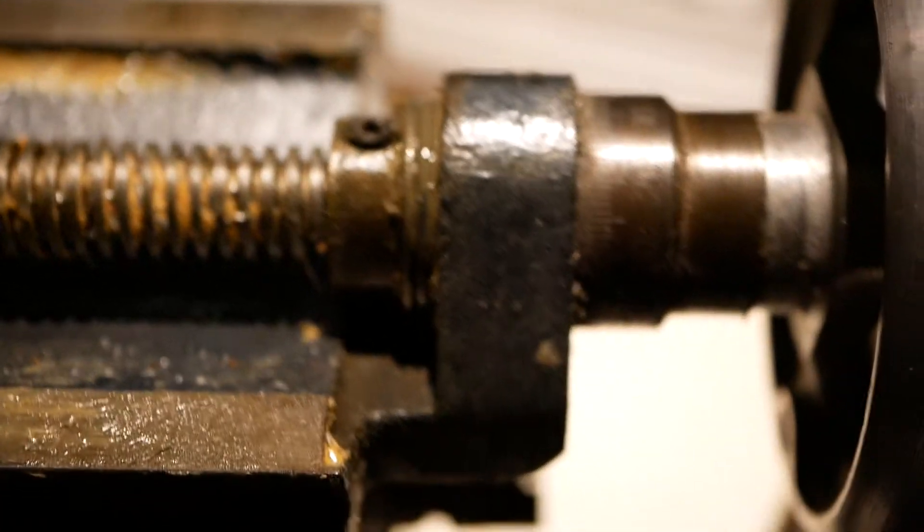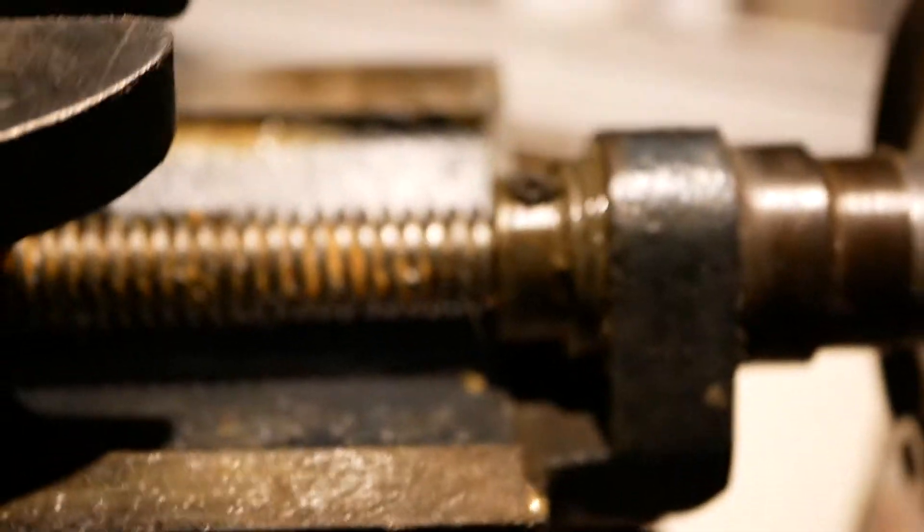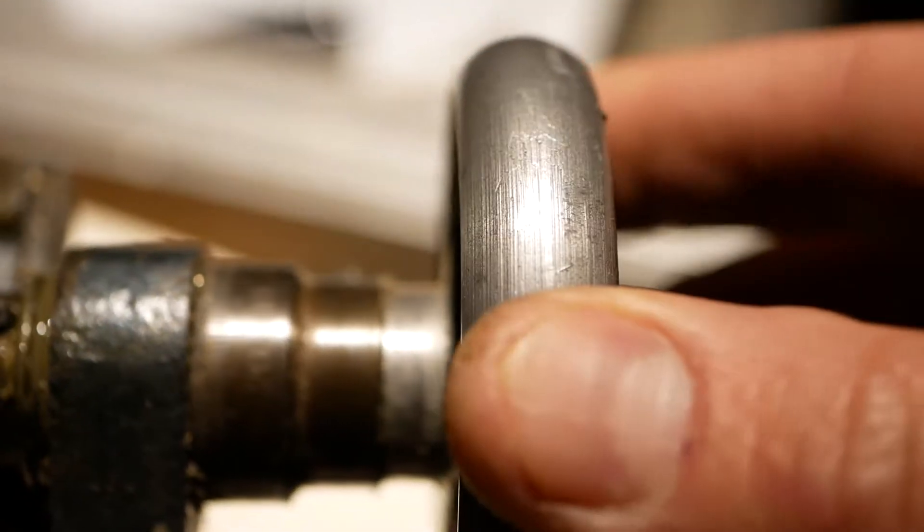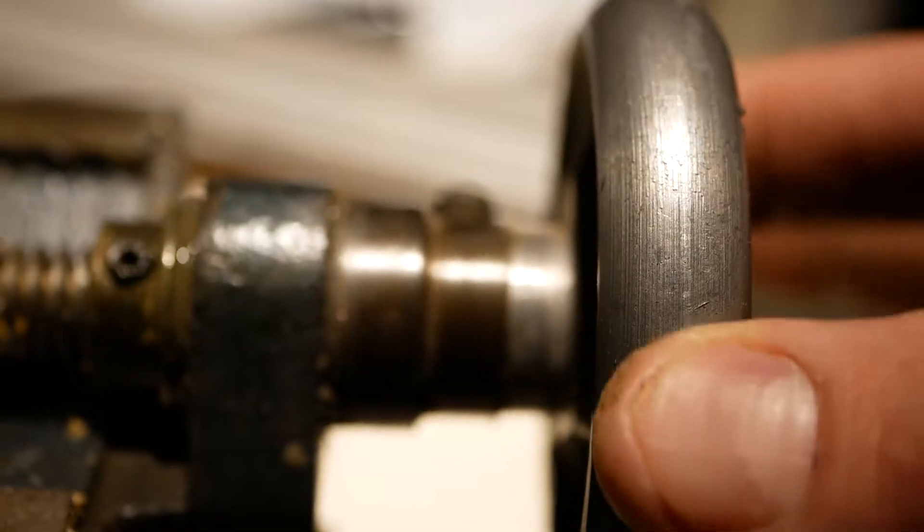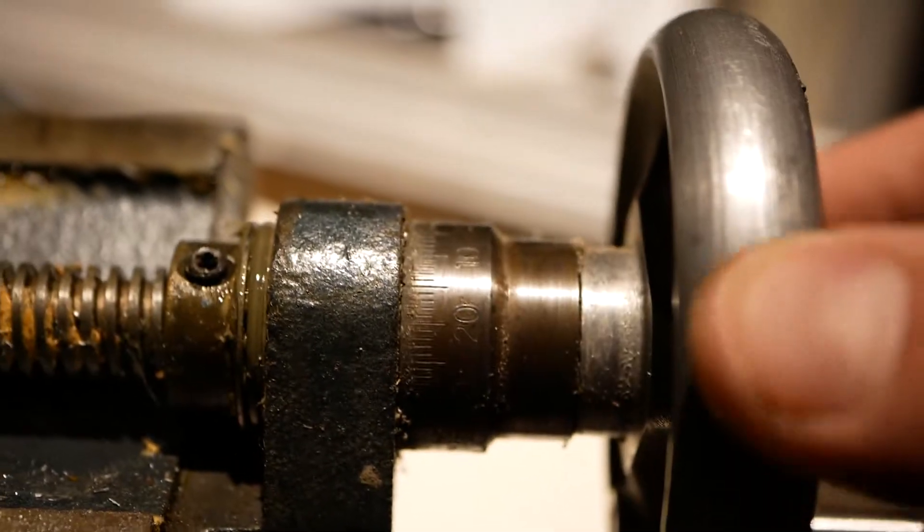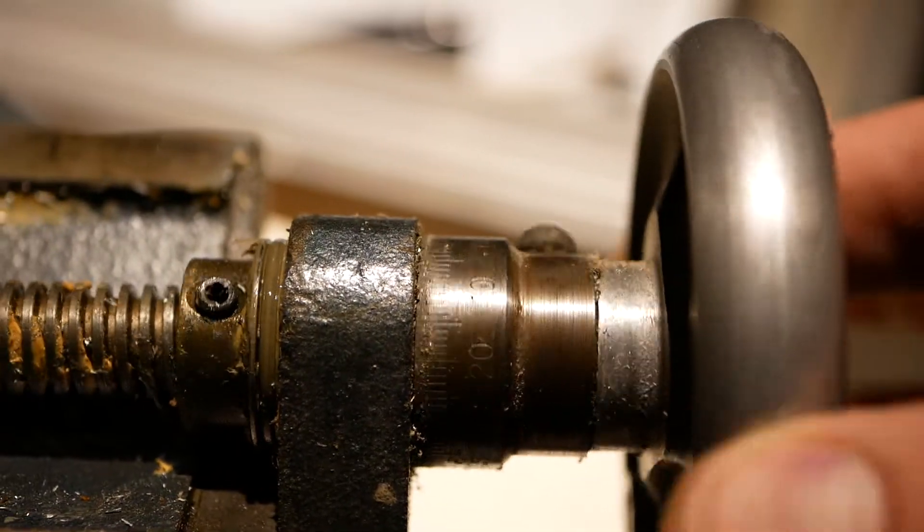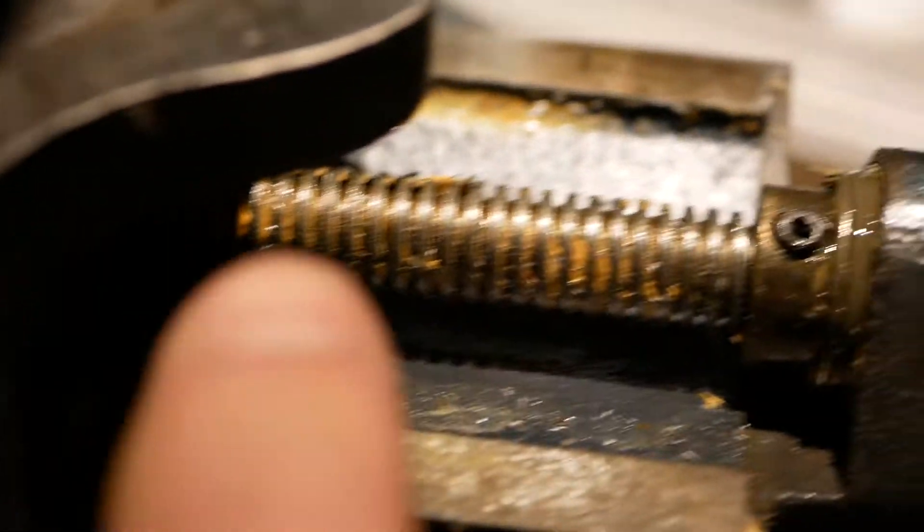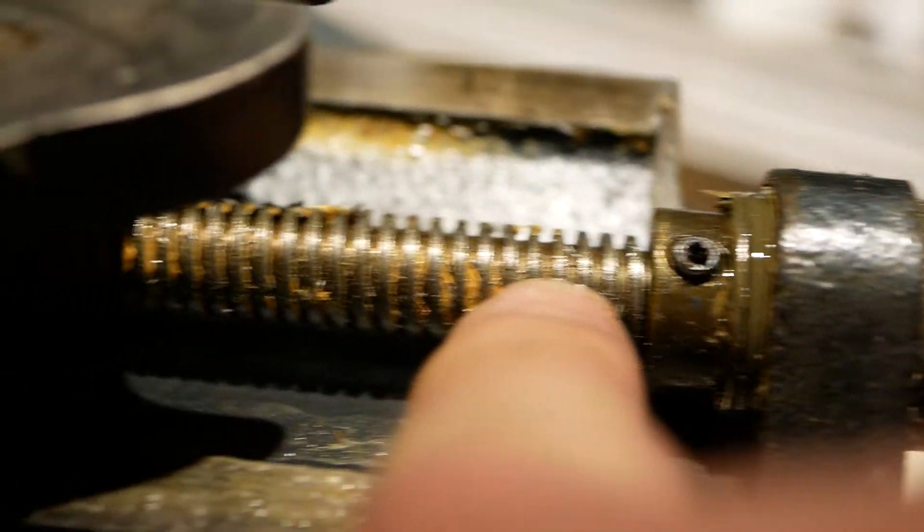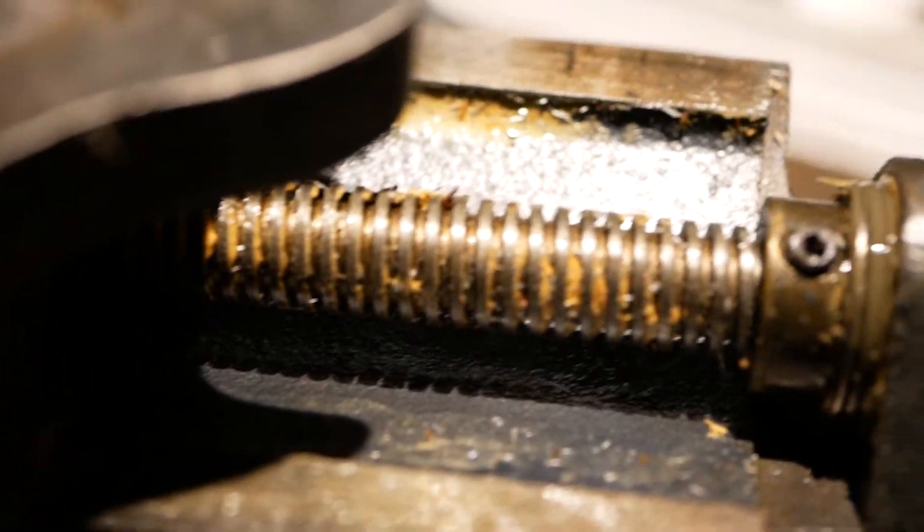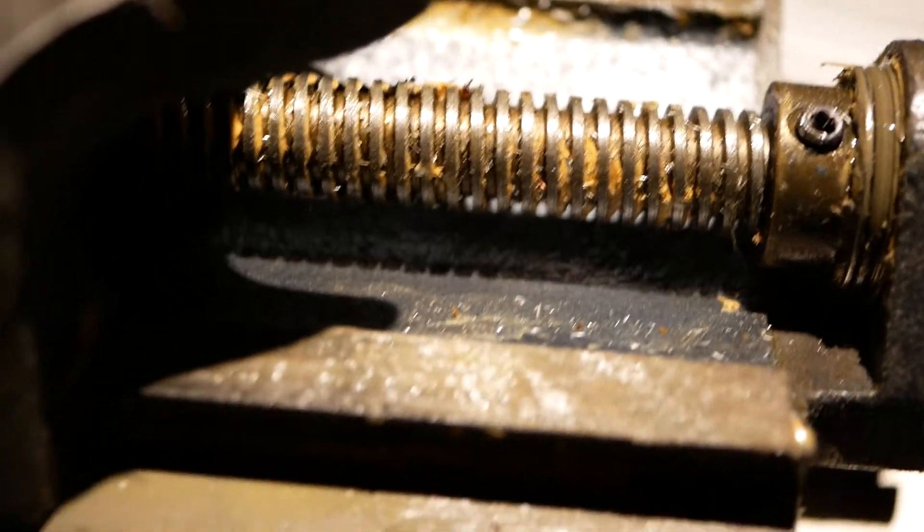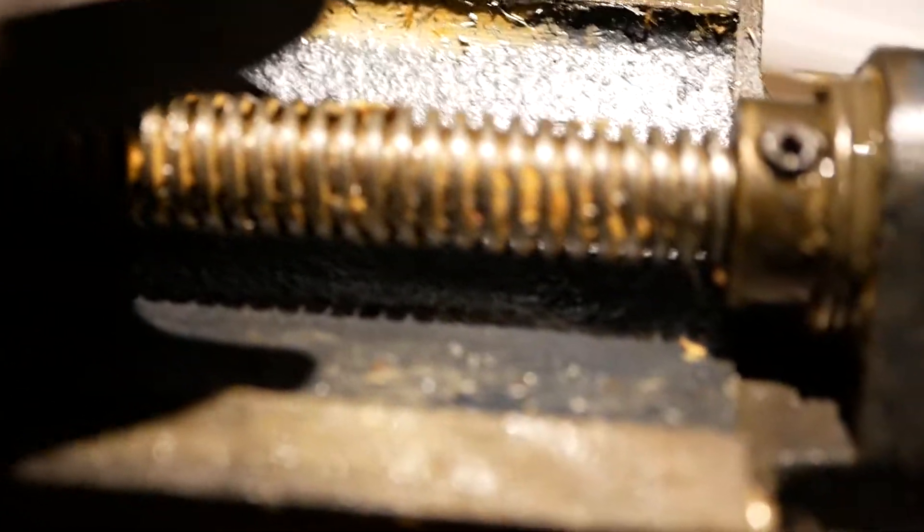So next thing I want to show you is lead screw slop. In other words, the threads don't mate up. Here is my handle. You'll notice I've got like eight, nine degrees worth of rotation. I'm just barely grasping the knob just with very light fingertip pressure and the knob spins freely. And what's happening is the threads on the lead screw and the threads inside here don't make a perfect matchup.